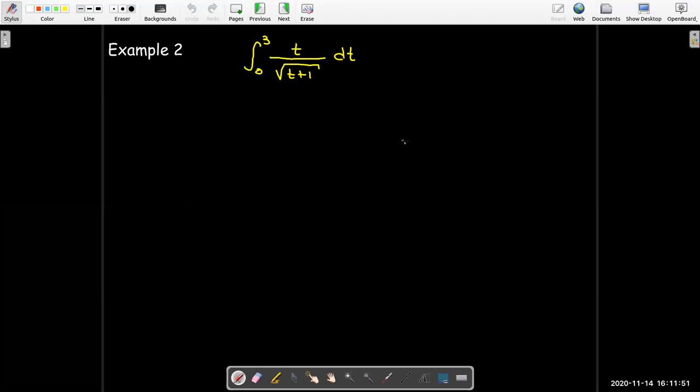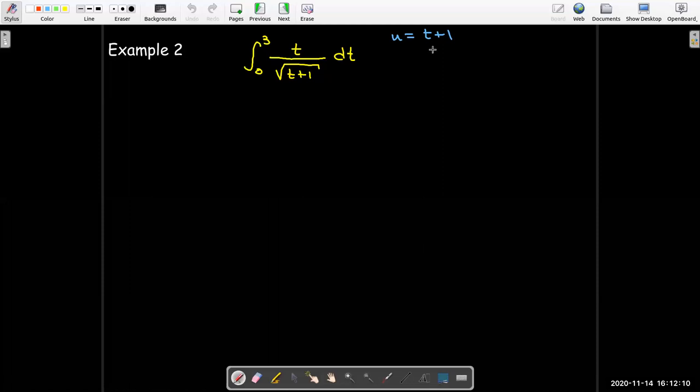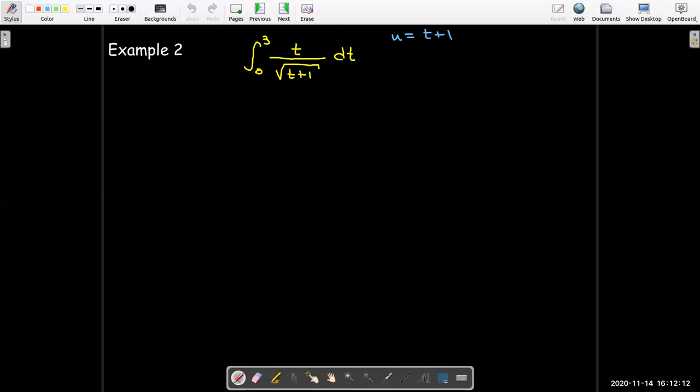All right. Here in our second example, we're taking the integral from 0 to 3, radical t over radical t plus 1. So the most complicated function here is the radical. So I look inside that radical and there's t plus 1. So u is going to equal t plus 1. Well, that makes things a little bit simple because then du is just dt. No need to solve for dt.